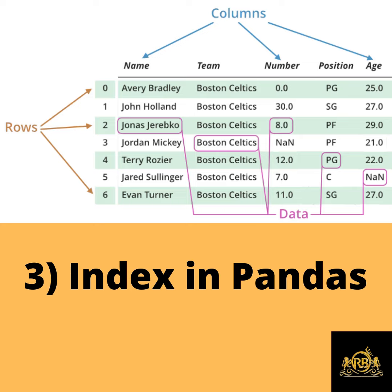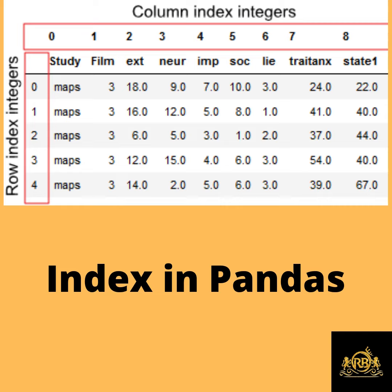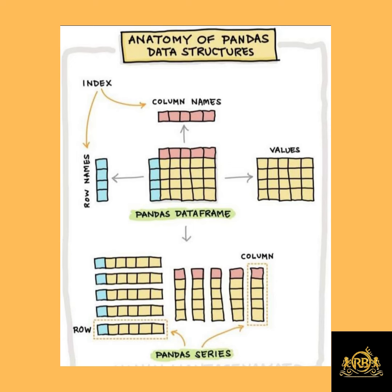The Index data structure is also under the category of a multi-dimensional array, where you are not only going to have a single index value, but you will have index values with respect to both the row values and the column values. You can refer to these as a tuple index, row index, attribute index, or column index. This is about the data structures in pandas — thank you so much.